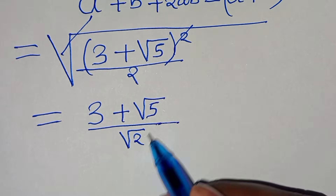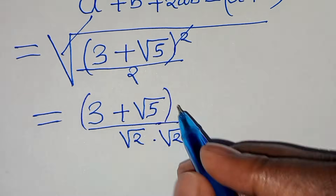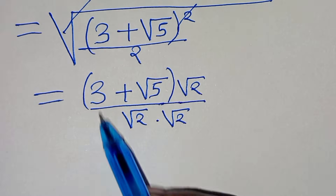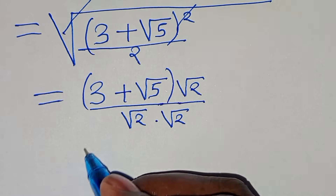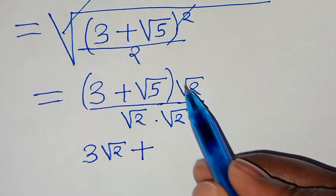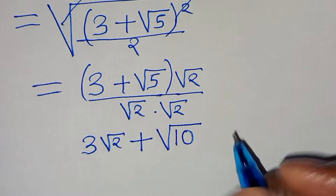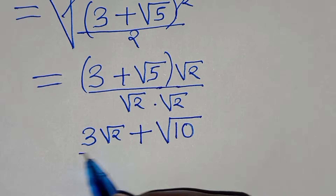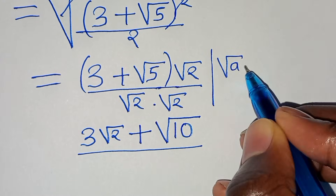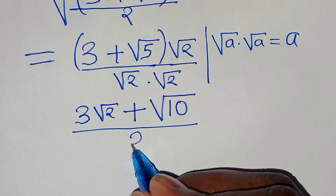The next step is to rationalize the denominator. We multiply by square root of 2 in the denominator and also multiply the numerator by square root of 2. So we have in the numerator 3 times square root of 2, plus square root of 5 times square root of 2 — which is square root of 10 — divided by square root of 2 times square root of 2. This is in the form of square root of a times square root of a, which equals a, so this is divided by 2.